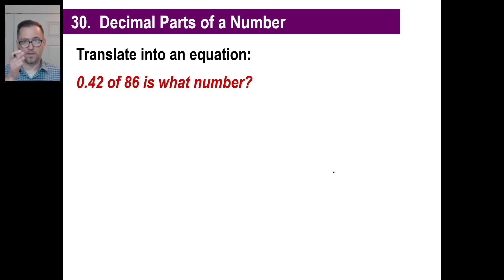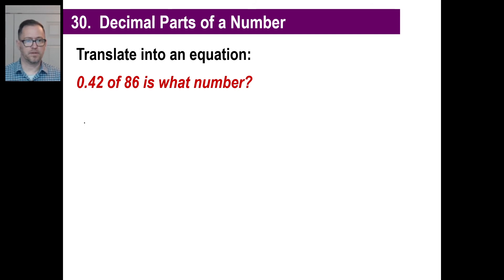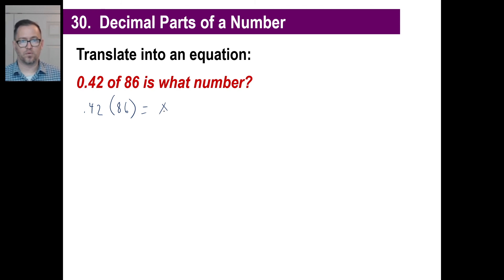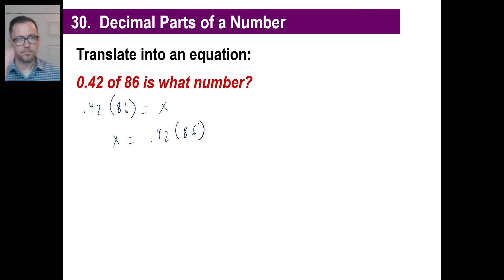Go ahead and pause it. Try this one and then come back when you're finished — you don't have to solve it, just set up the equation. Answer: 0.42 of 86 equals what number, so 0.42(86) = X, or X = 0.42 × 86. We can do the arithmetic if you want — though neither of us really wants to.